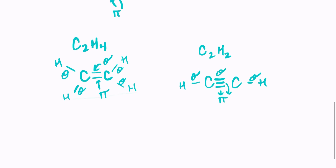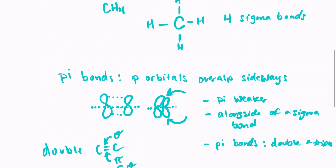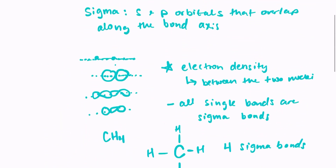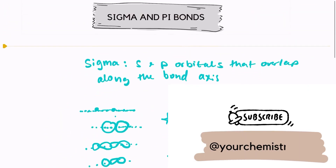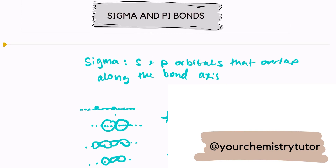I hope this was helpful. If you need further clarification, let me know. The easiest way to tell the two apart: sigma bonds are always single bonds; pi bonds are only found in double and triple bonds. Thank you so much for stopping by.